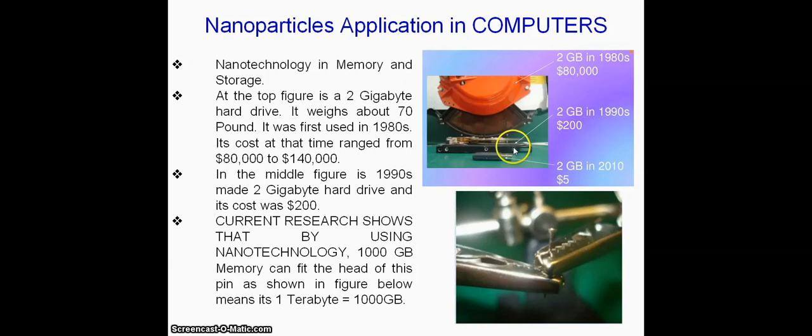In 2010, using nanotechnology, a 2 GB hard drive cost $5. Current research shows that by using nanotechnology, 1000 GB memory can fit on the head of a pin. One terabyte, equal to 1000 GB, is placed on the tip of this pin.